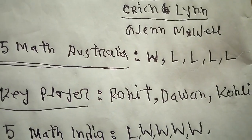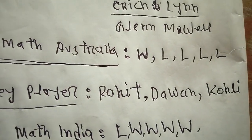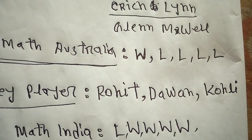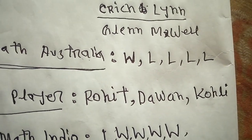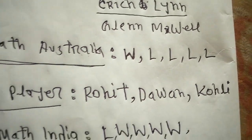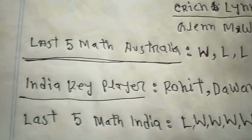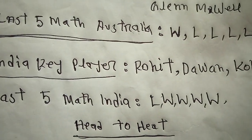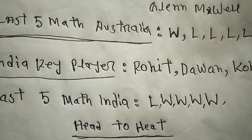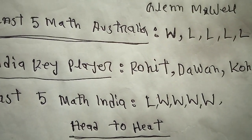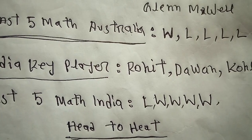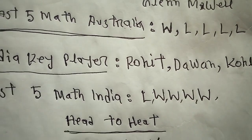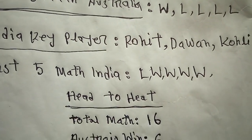India's key players are Rohit, Dhawan, and Virat Kohli. Rohit and Dhawan are very good batsmen, and Virat Kohli is the captain of India. In their last five matches, India's record is one loss and four wins.